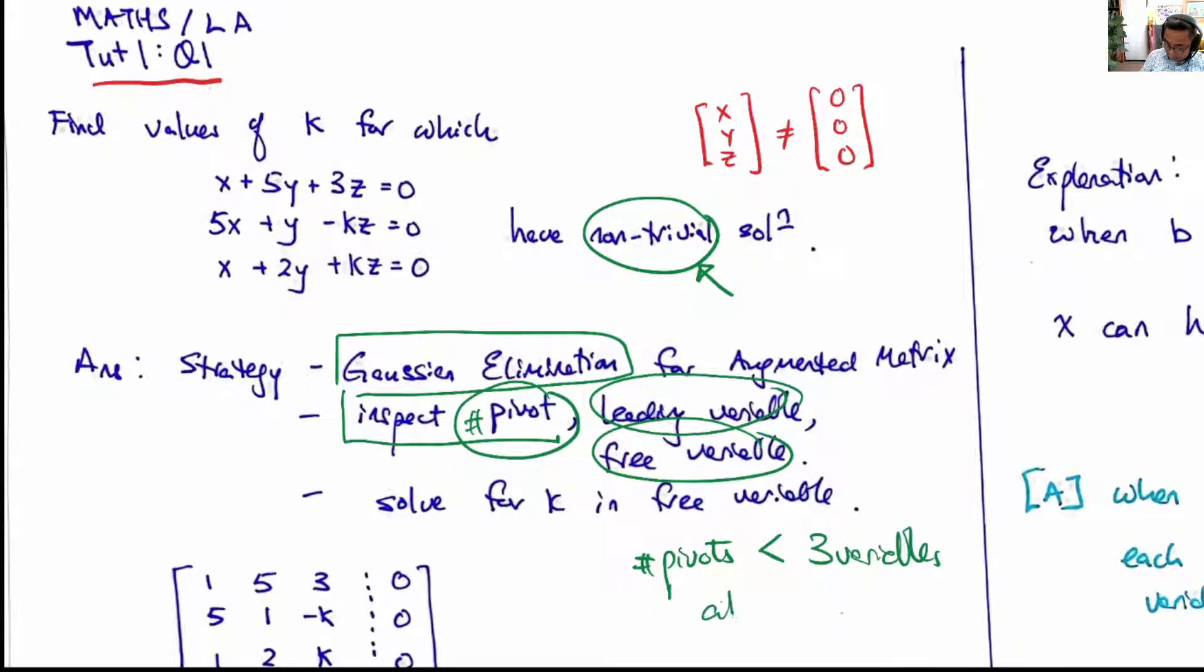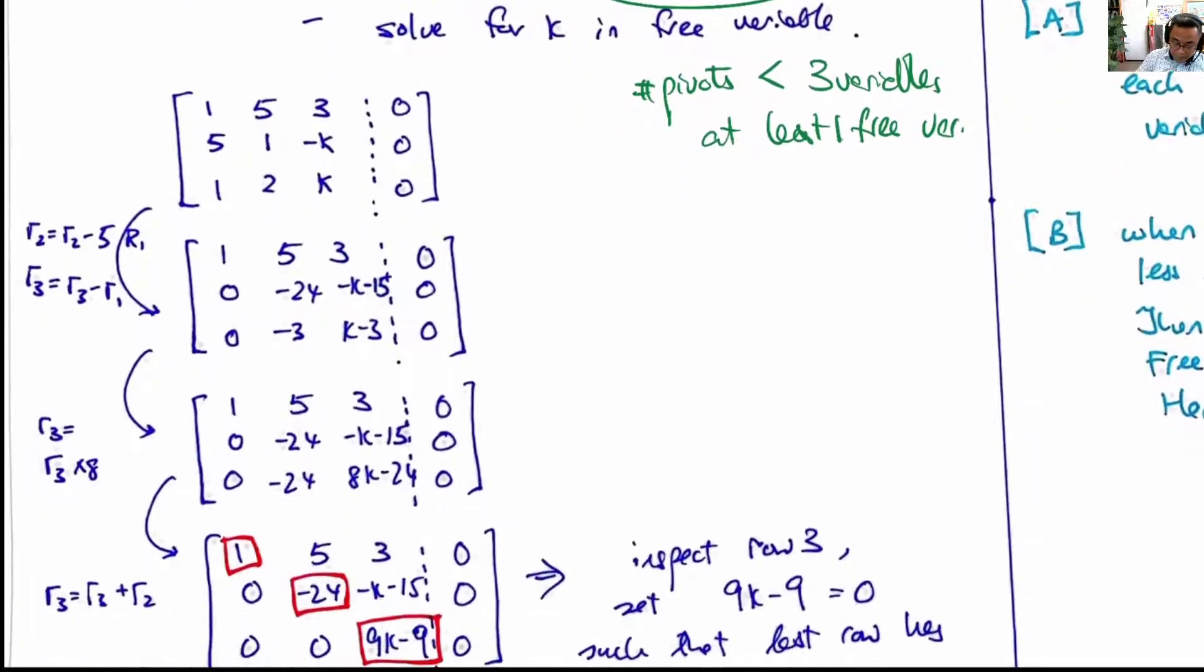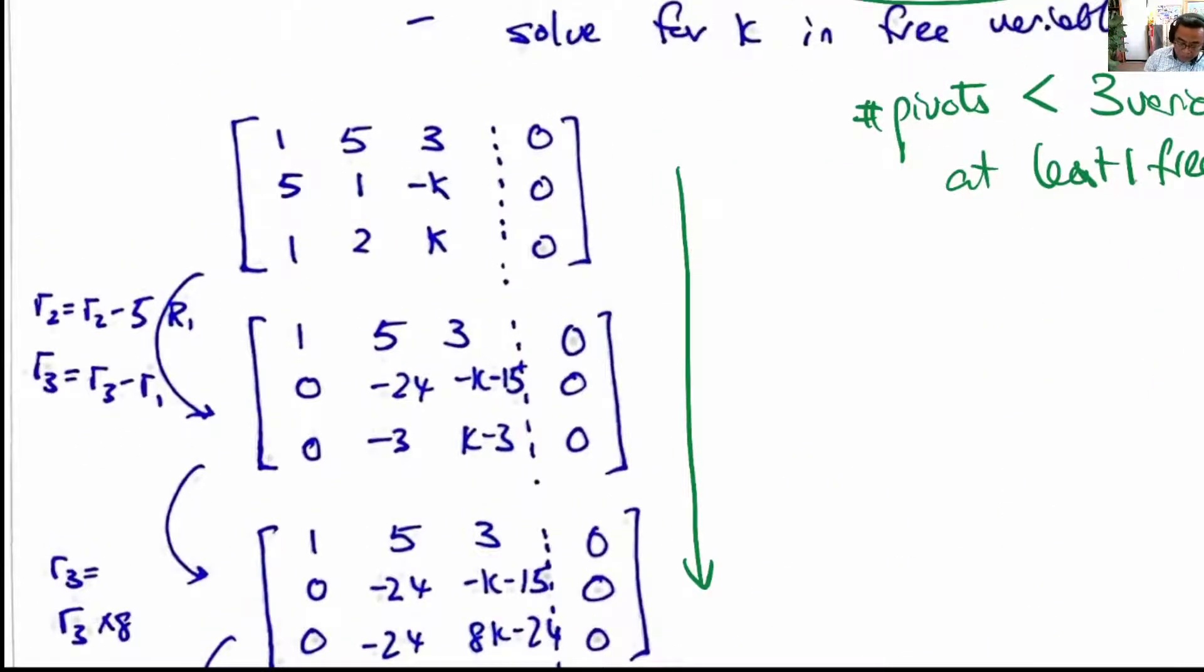There must be at least one free variable, so the process of Gaussian elimination is this. We expect you to be able to do the following Gaussian elimination. Let's just do one.